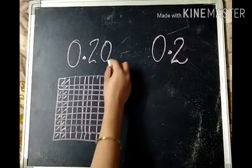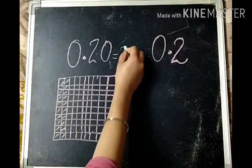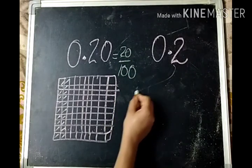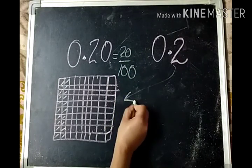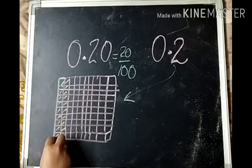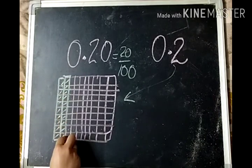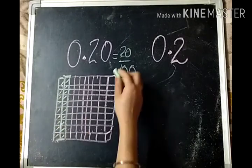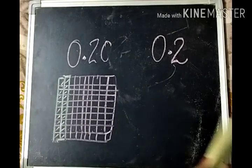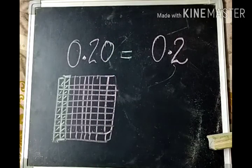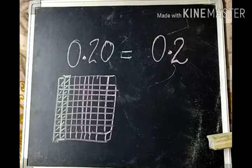So these are twenty hundredths. And two tenths as well. This one full is one tenth and this is two tenths. So these both are equal. Every time you have to make a diagram before comparing them.